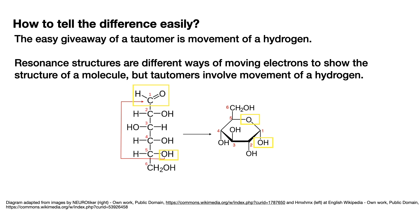The hydrogen has moved. From the left structure, we have the hydrogen on carbon 5, and now it's moved to carbon 1 on the right structure. This is a ring-chain tautomerism of glucose — an important form of tautomerism to know, and essentially a movement of a hydrogen. So basically, just look for movement of a hydrogen.